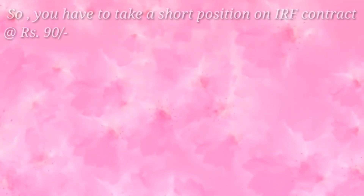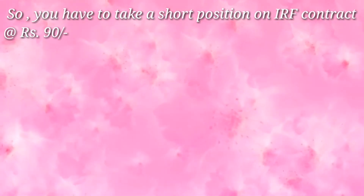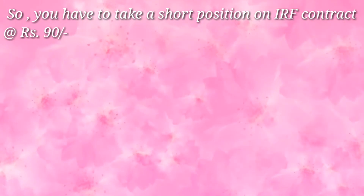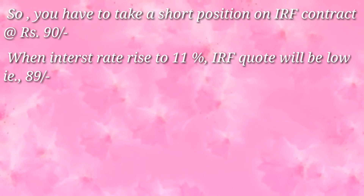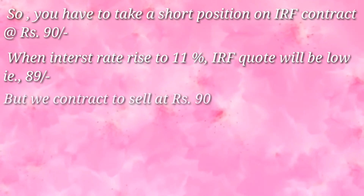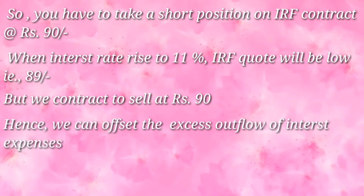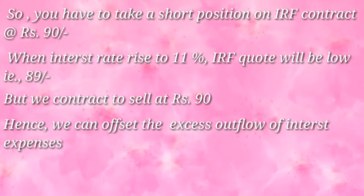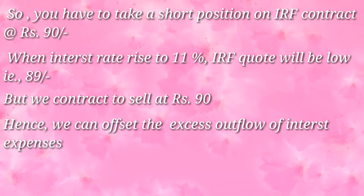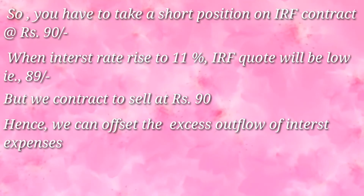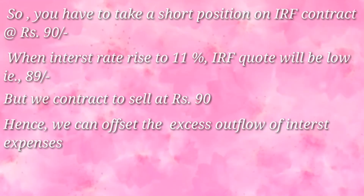It is clear that after four months the IRF quote would be 89. So you take a short position on the IRF contract at Rs. 90. When the interest rate rises to 11%, the IRF quote falls to 89, but you contracted to sell at Rs. 90 — so you make a gain. This gain offsets the excess outflow of interest expenses, which is how you hedge using interest rate futures.